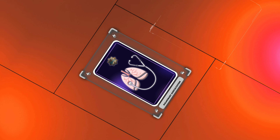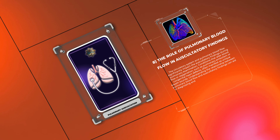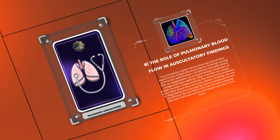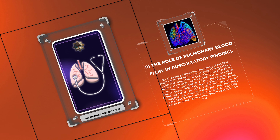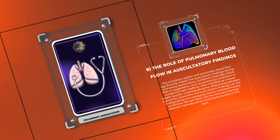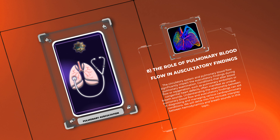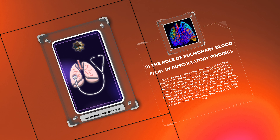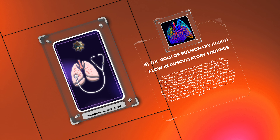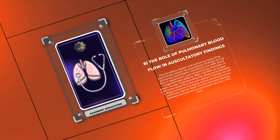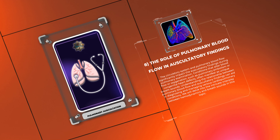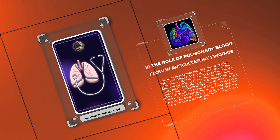The circulatory system and pulmonary blood flow significantly impact the auscultatory findings during pulmonary examination. Conditions that alter blood flow or oxygenation, such as pulmonary embolism or congenital heart defects, often manifest as unique breath sounds. Understanding the relationship between pulmonary blood flow and auscultatory findings can aid in diagnosing and managing various cardiopulmonary conditions. We will delve into the intricate interplay between hemodynamics and breath sounds in this topic.